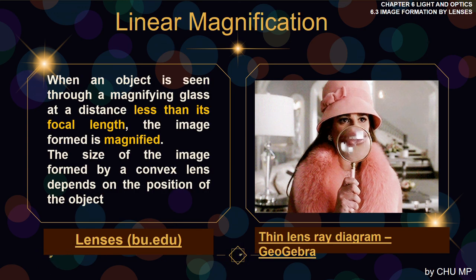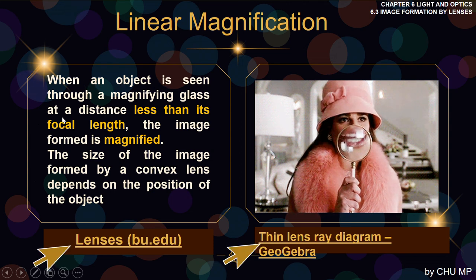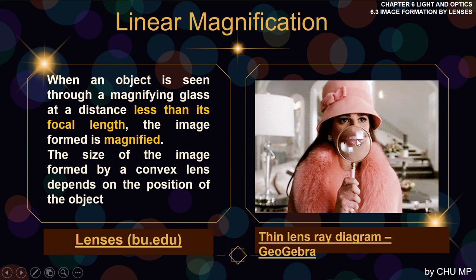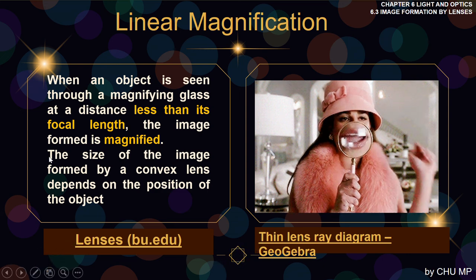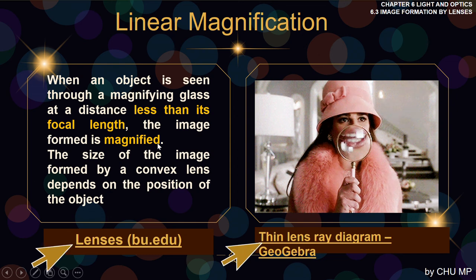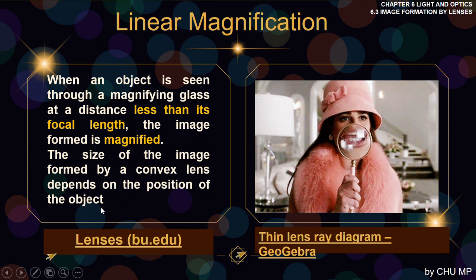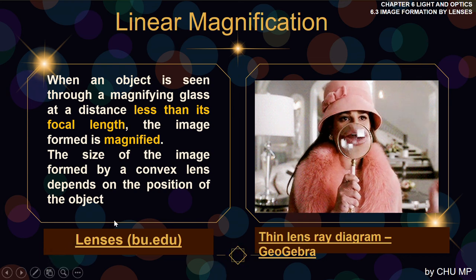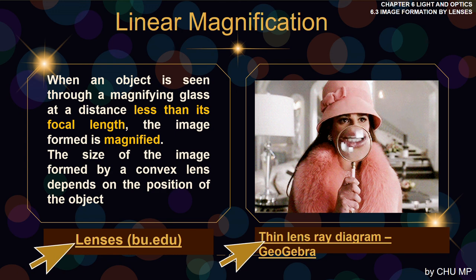Now we move to linear magnification. When an object is seen through a magnifying glass at a distance less than its focal length, the image formed is magnified. The size of the image formed by a convex lens depends on the position of the object — different object positions produce different image sizes for a convex lens. For a concave lens, the characteristics are always the same regardless of position.